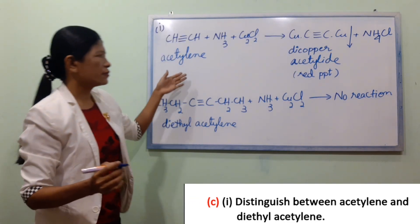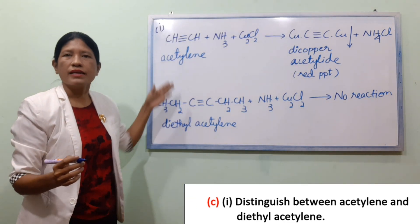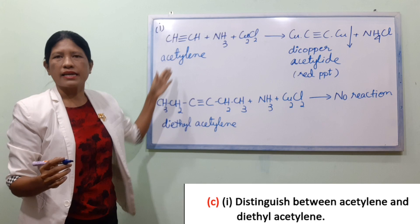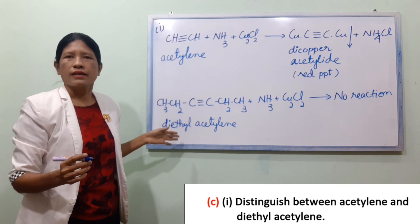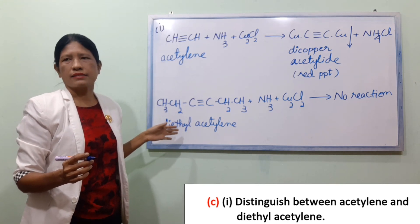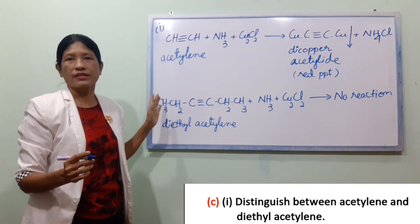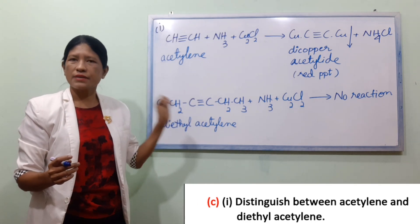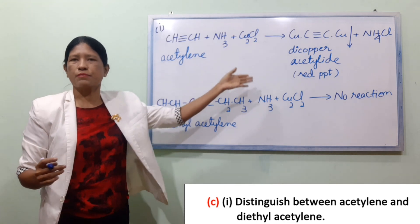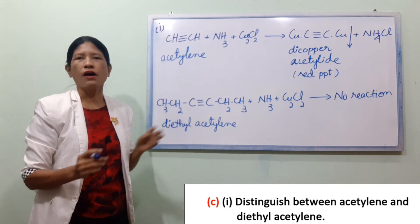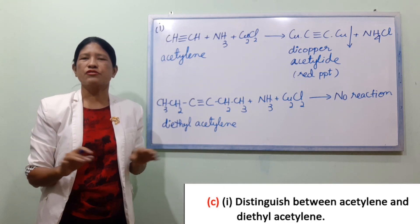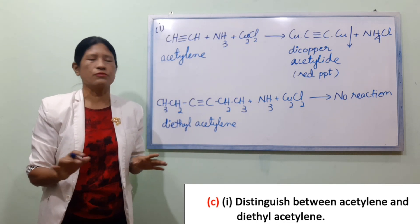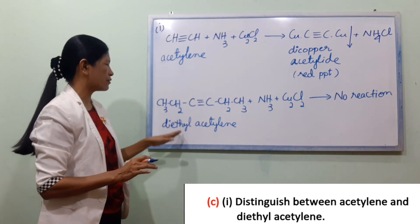When you are done, you will get a precipitate of the acetylide. You need to get a red precipitate, and if you try it, you should be able to see this in your results.